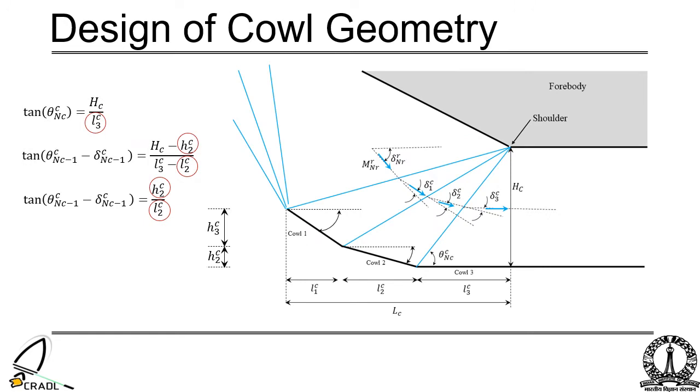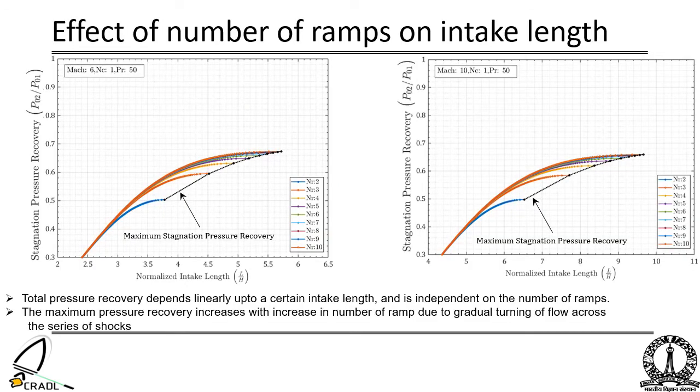Figure shows the variation of stagnation pressure recovery with the intake length. The intake length is normalized with the height of capture area. It is reported that total pressure recovery depends linearly up to a certain intake length and is independent of the number of ramps. The black dotted lines show the locus of maximum pressure recovery for a given intake geometry, as is shown in figure.